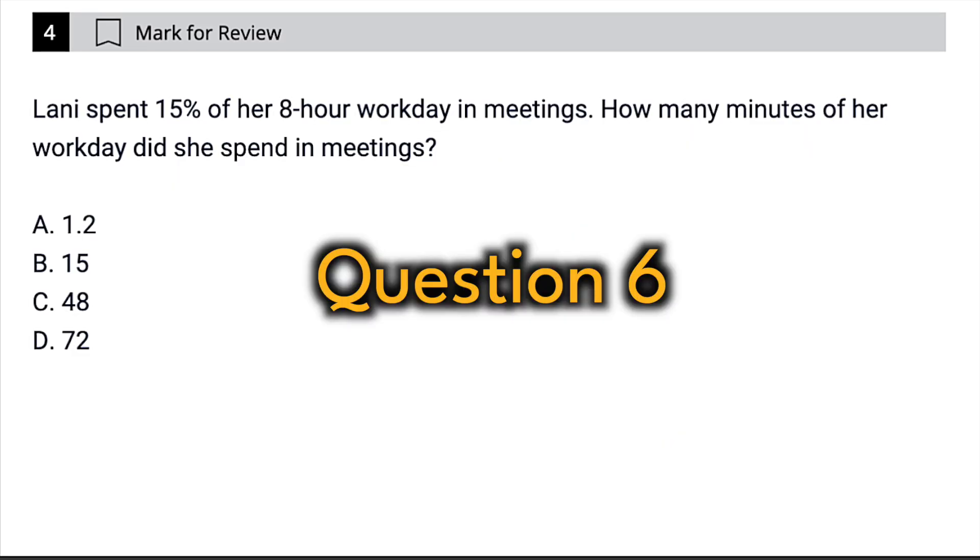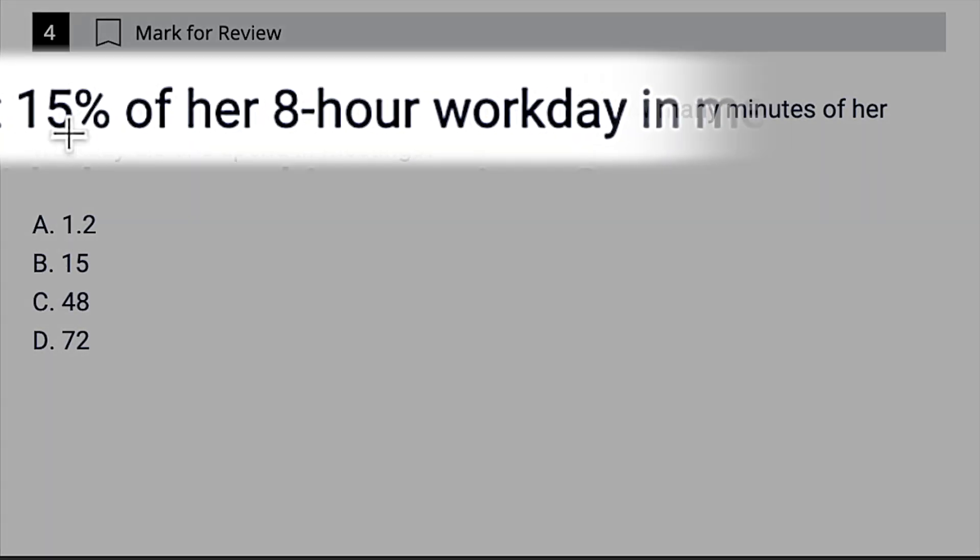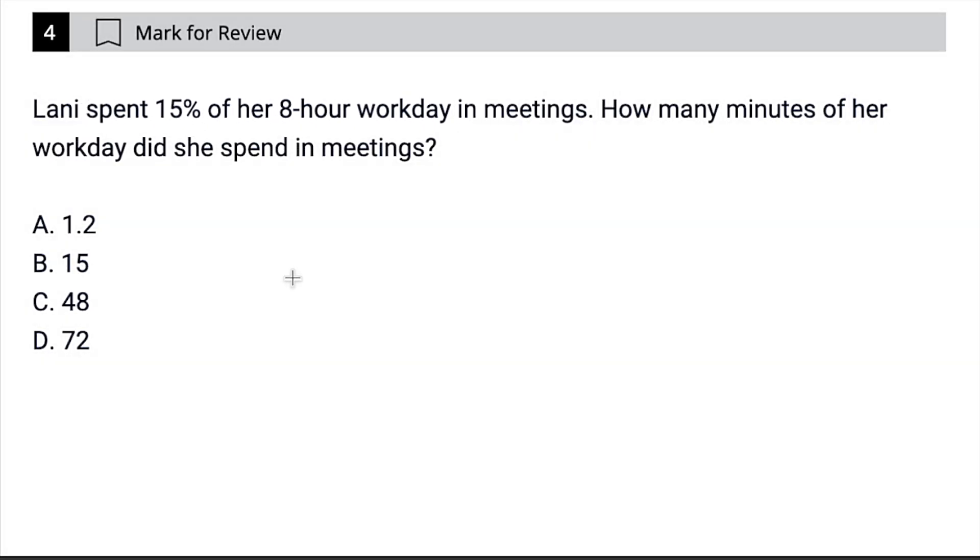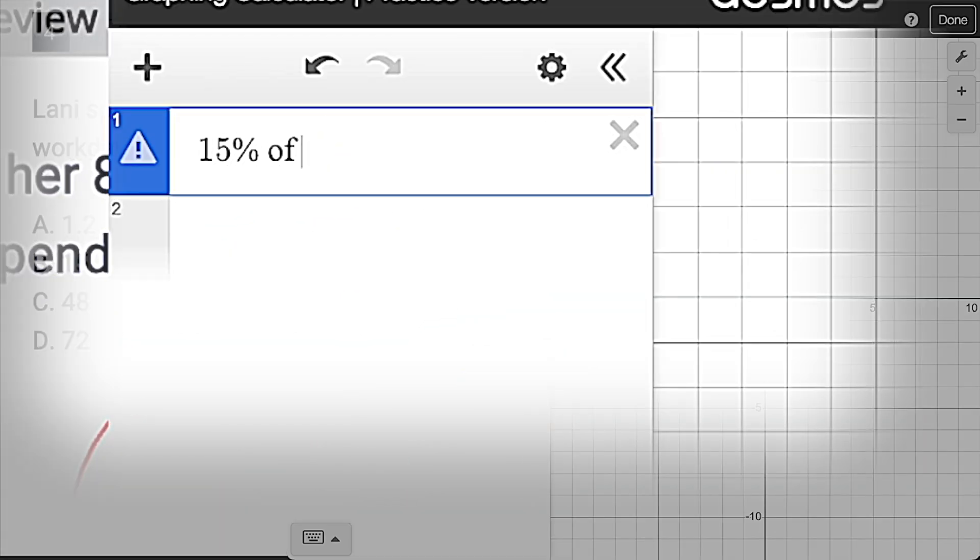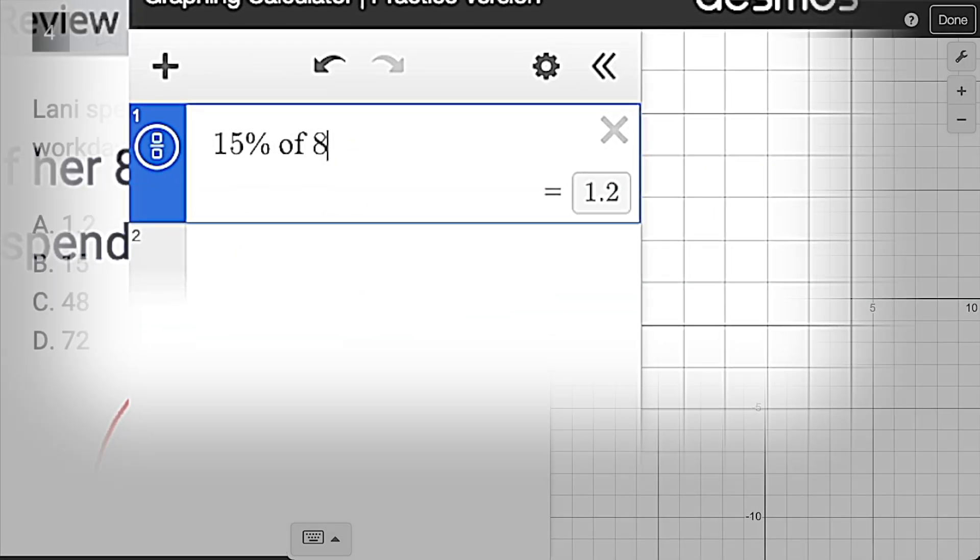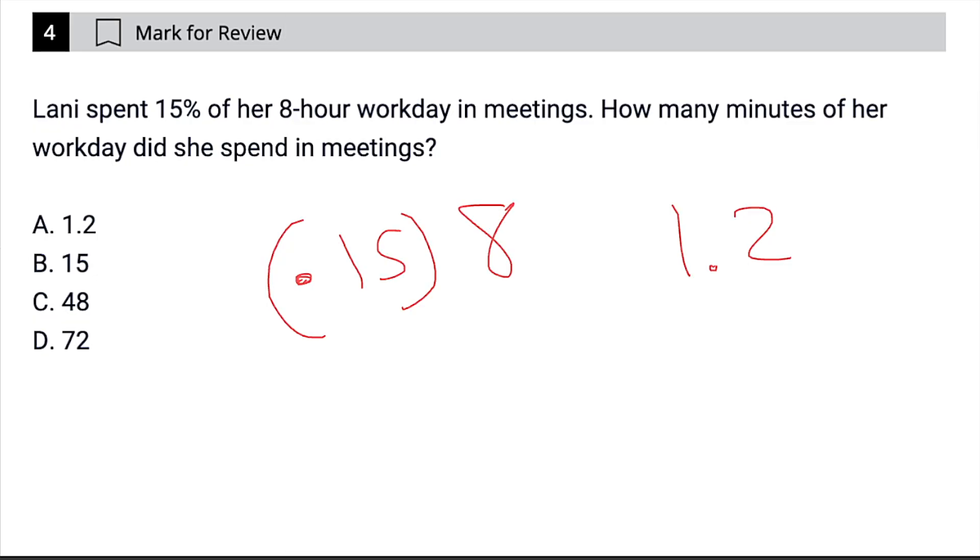This one is easy to miss if you're rushing because you say 15% of her eight hour workday. Cool. 15% of eight, you could say 0.15 times eight. And you could be like, oh, well, eight times 15, that's 120. So it's 1.2. Or, hey, I'm just going to use Desmos real quick. 15% of eight is 1.2. And then you're like, cool, I got my answer 1.2.